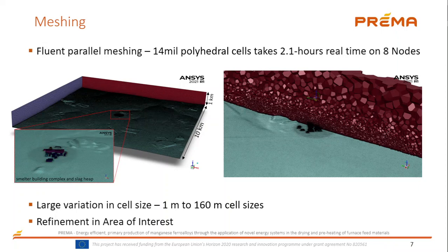The first step is to obtain appropriately accurate terrain data, simplified versions of the smelter building complex, and then to generate a series of meshes for sensitivity analysis. The final mesh was built using the Fluent Parallel Meshing Tool with 14 million polyhedral cells, which takes about two hours at the CHPC on eight nodes.